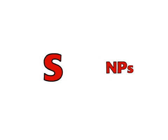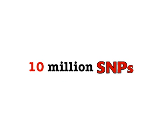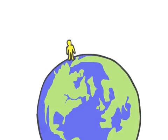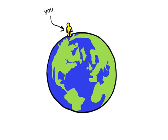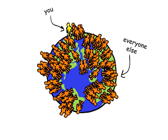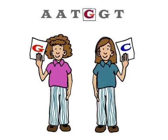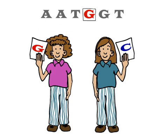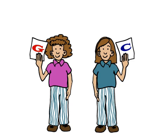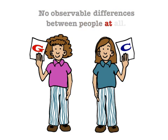There are around 10 million SNPs in the human genome, which account for many of the genetic differences between you and everyone else on the planet. Some SNPs account for differences in appearance. Others can affect how we develop diseases or respond to drugs. Most SNPs, however, seem to lead to no observable differences between people at all.